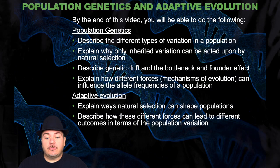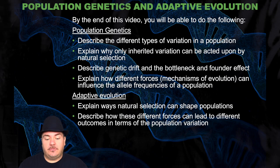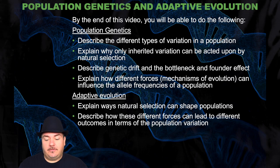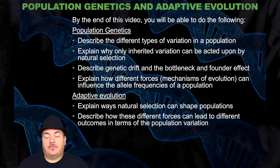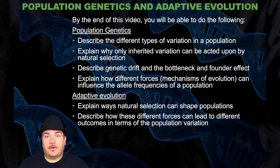By the end of this video, you should be able to describe different types of variation in a population, explain why only inherited variation can be acted upon by natural selection, describe genetic drift, the bottleneck, and the founder effect, explain how different forces and mechanisms of evolution can influence the allele frequency of a population, explain ways natural selection can shape populations, and describe how these different forces can lead to different outcomes in terms of population variation.